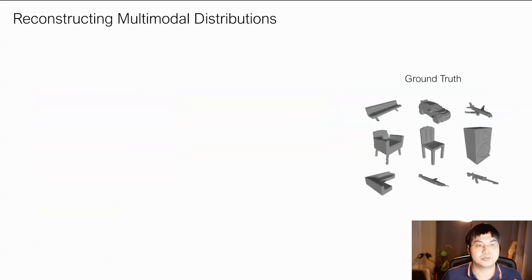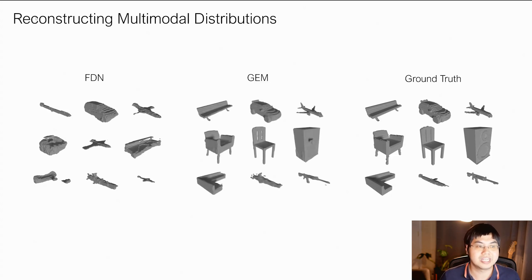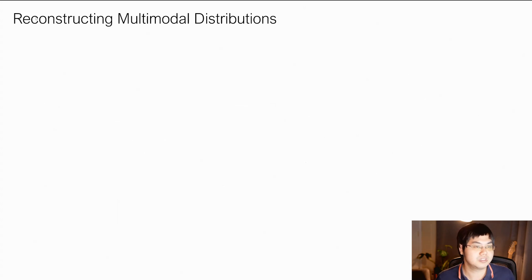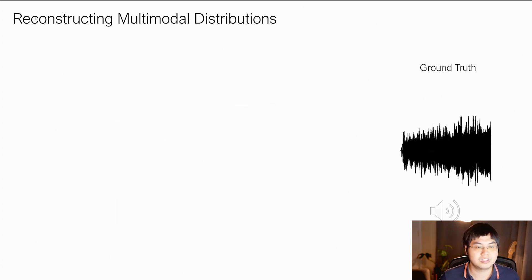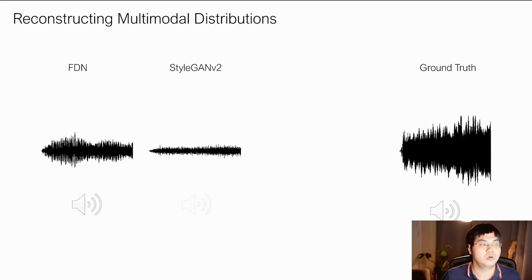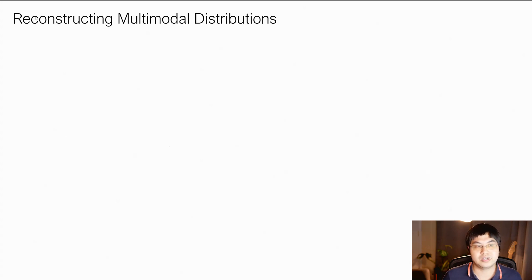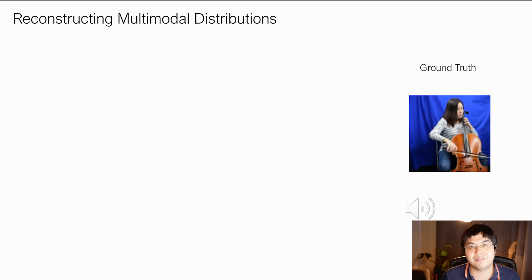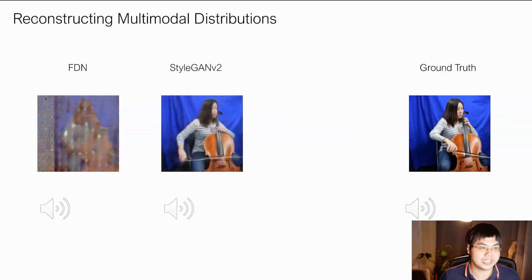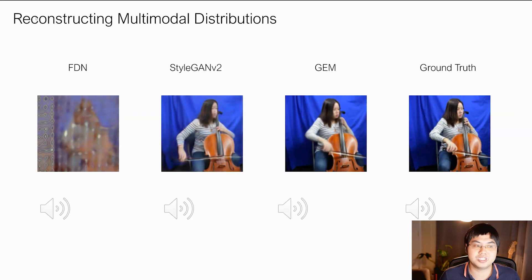Next, let's consider 3D shapes. Again, we find that FDN only gets very poor shapes, while our approach gets more consistent looking 3D shapes. We can also try this with audio. If we use FDN to fit the audio, or StyleGAN, while our approach obtains a signal nearly the same as the ground truth. We can also try this with audiovisual signals, where we have an image of a person playing the cello, as well as the corresponding audio. If we try FDN, or StyleGAN, while our approach gets good images and audio.